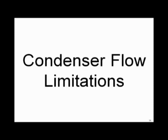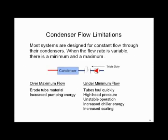How about condenser water flow limits? Is there a maximum flow for the condensers themselves? Yes. If you overflow the condensers, you'll erode the tubes. Most centrifugal or reciprocating condensers have a maximum velocity of 8 to 8.5 to 9 feet per second. Exceeding those numbers keeps tubes clean but causes erosion, making the tubes very thin — a serious problem. And beyond that, why waste all that pumping energy pushing flow through something that doesn't need it?